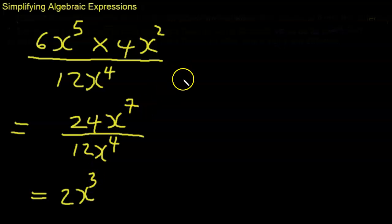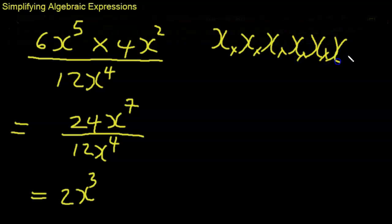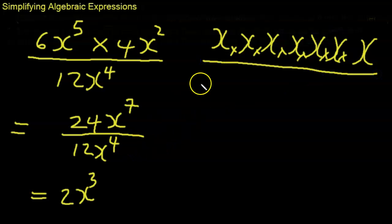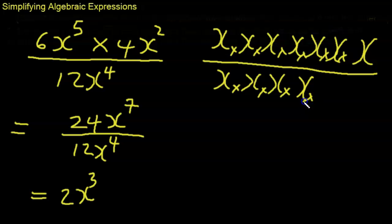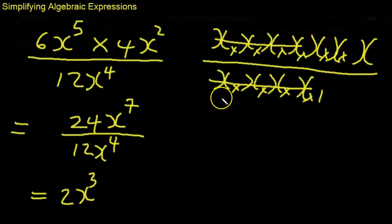Remember what indices mean: x to the power of 7 means you multiply x seven times, and x to the power of 4 means you multiply x four times. So 4 of those x's divide into 4 of these x's, leaving x times x times x, which is x cubed. That's why the law says: dividing same base, just subtract the powers.